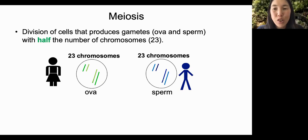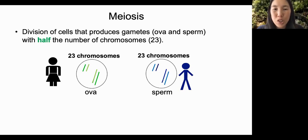Meiosis is therefore critical for reproduction. In fact, it is only used for reproduction.